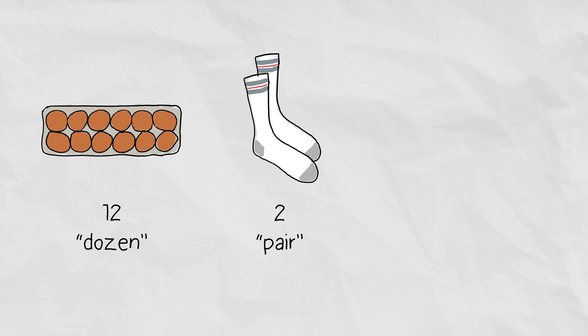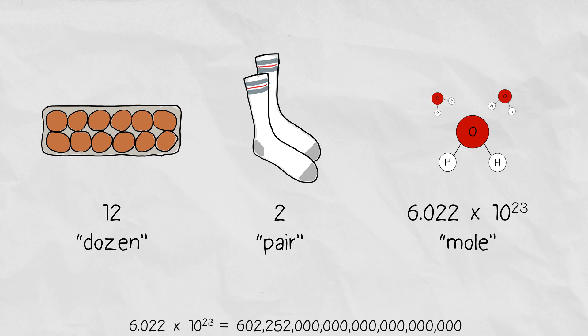Chemists like to do the same thing when counting the amount of a substance, except the number is a bit larger. In fact, it's much larger. Chemists like to use the number 6.022 times 10 to the 23. That is referred to as a mole.